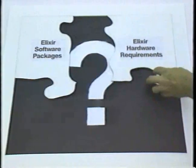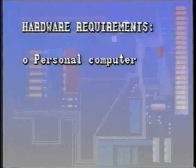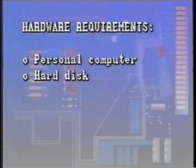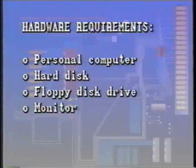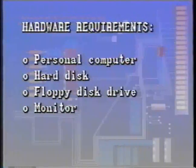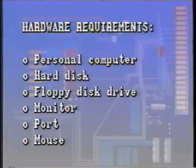Now let's add the next piece to our puzzle: the Elixir hardware requirements. They are an IBM or compatible personal computer, a hard disk with a minimum of 20 megabytes, a 1.2 megabyte floppy disk drive, either a Wyze 700 high resolution monitor or a Sigma Laser View — although VP297 software does not require a high resolution monitor — one parallel port for your security key, and either a Microsoft serial mouse, a PC mouse, or a Logitech mouse. Elixir hardware is described in greater detail in your Elixir user guides.